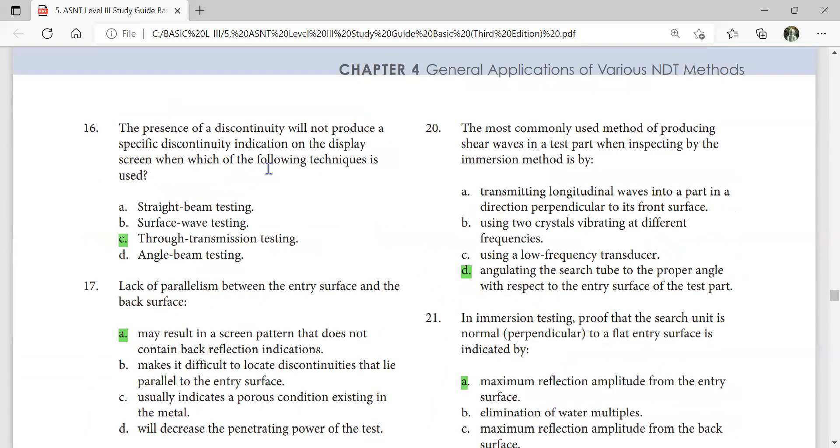The presence of a discontinuity will not produce a specific discontinuity indication on the display screen when using through transmission testing. Because when you have a discontinuity, your transmission through will be obstructed, meaning it cannot pass through, so there is no indication.